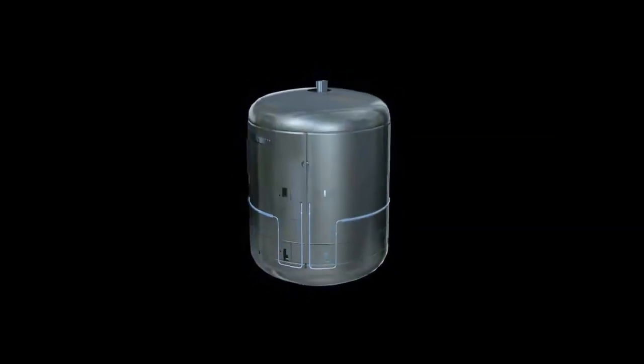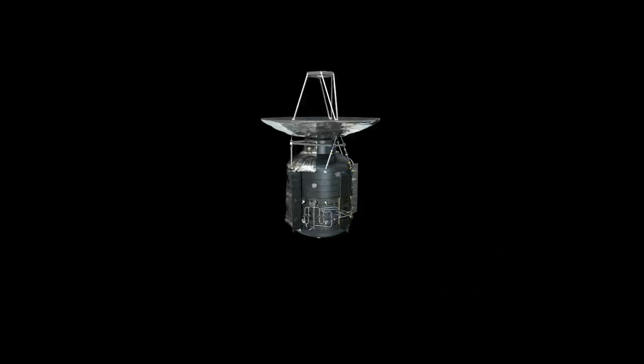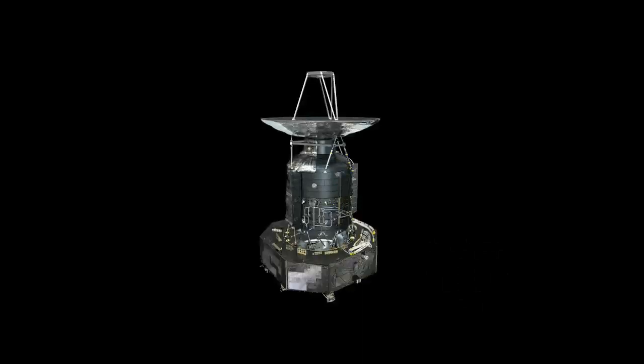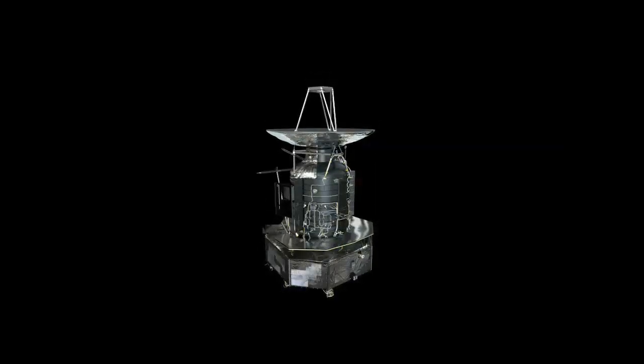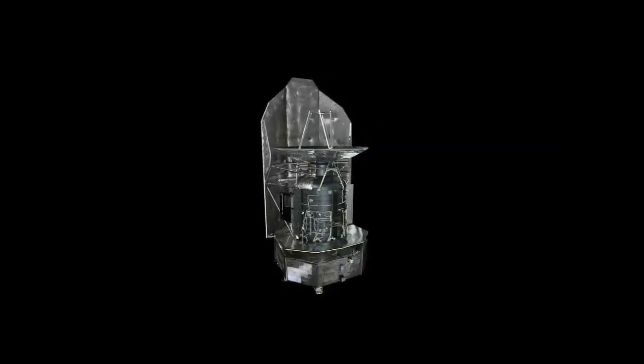This is the payload module of Herschel and is located underneath the huge primary mirror. The surface module, housing the instrument's electronics and communications hardware, sits below the payload.